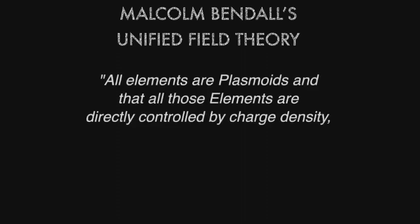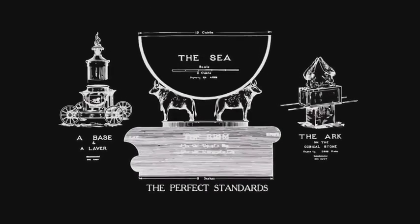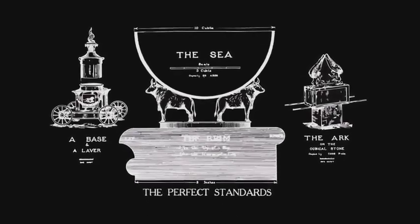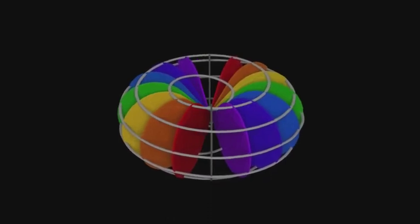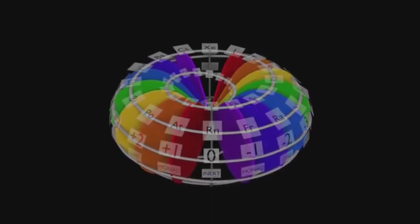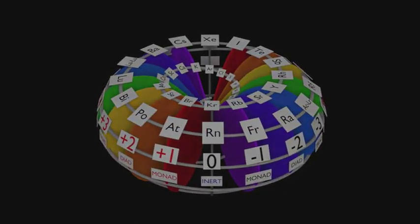The underlying principle of Malcolm Bendel's unified field theory is that all elements are plasmoids and that all those elements are directly controlled by charge density, therefore making charge density the only relevant characteristic when considering zero matter, time, light and matter. The implosive vortex waveguide is inspired by the molten sea Vajra based on Malcolm Bendel's scientific observations drawn from his Bendel torus. This led to his unified field theory which is clearly illustrated by his model of the elements and his octave dimensional model.